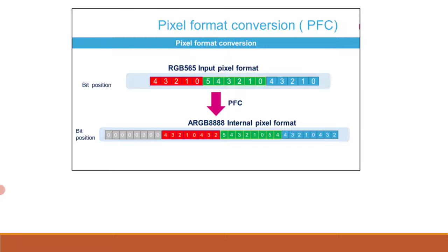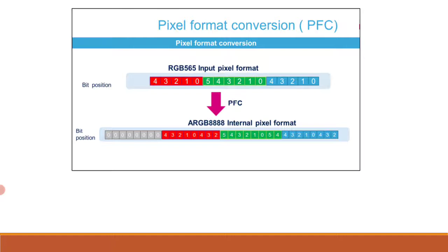Note that conversion from direct color to indirect color, or from indirect color to direct color, is straightforward. However, converting a direct color to an indirect color would mean regenerating a color lookup table (CLUT), which is a very complex operation.